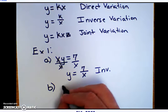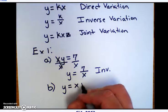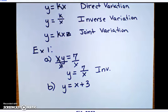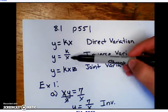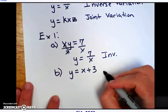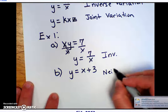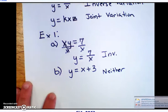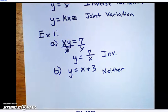Letter B says y equals x plus 3. Now, if you see a plus or a minus sign, just know that it's neither. Okay? If you look at all three of these formulas that we have, none of those have a plus or minus. So this is neither inverse or direct variation.